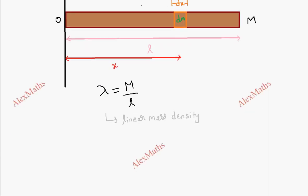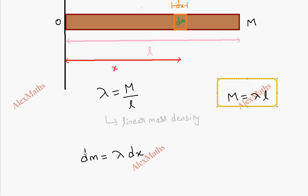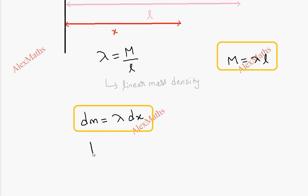Now consider the small element of mass dm. We can write capital M equals lambda into L. For the small element, dm equals lambda into dx. Since lambda is m by L, we get dm equals (m/L) dx.